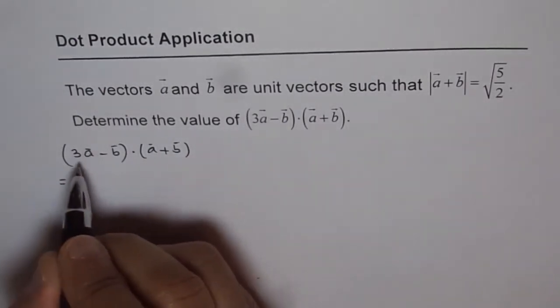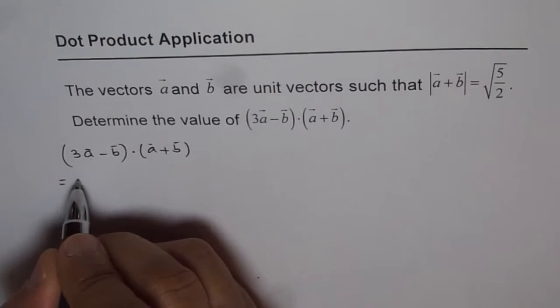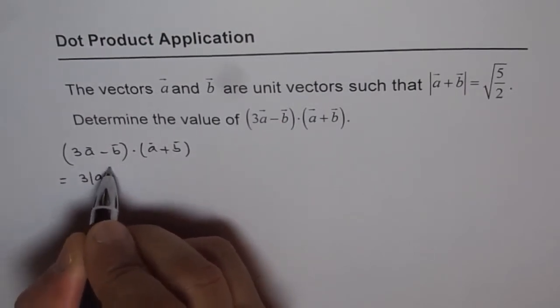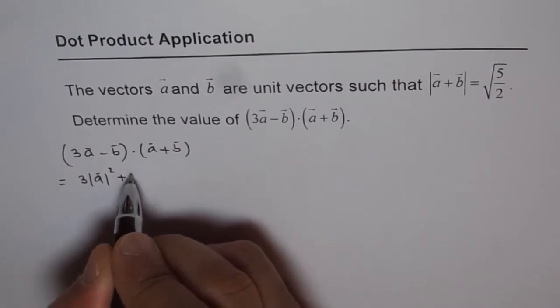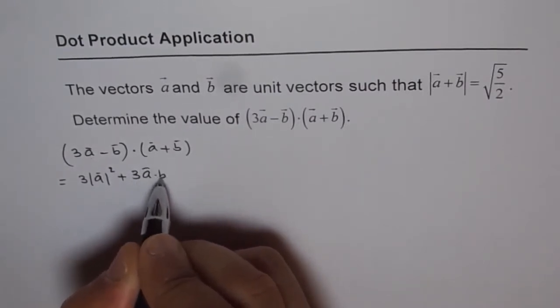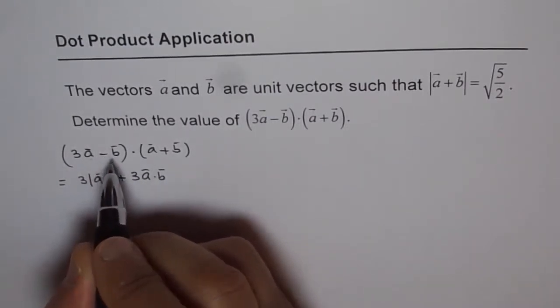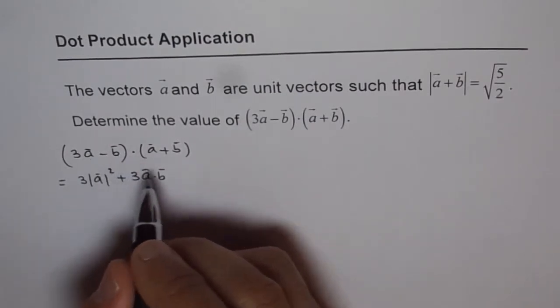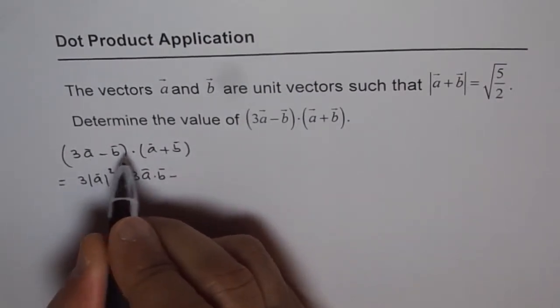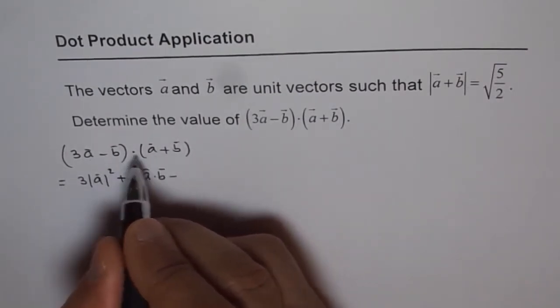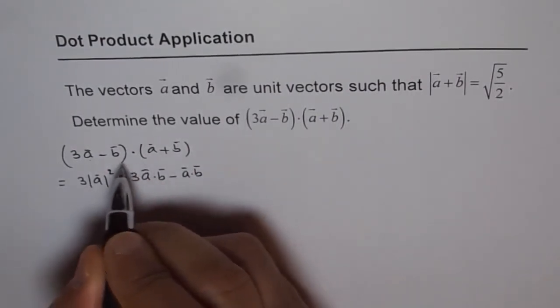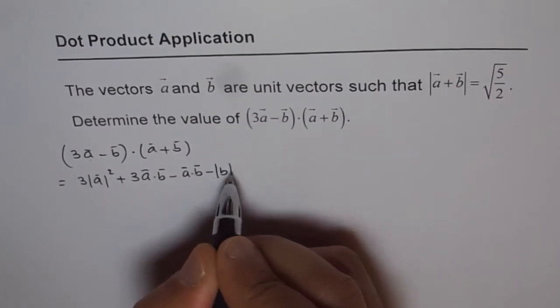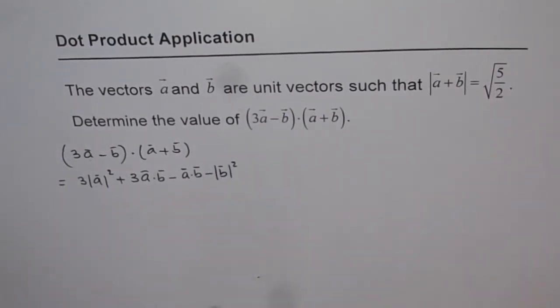And when you expand it, you get 3a dot a, which is 3 times the absolute value of a squared. And then you have plus 3a dot b, and then you multiply by minus dot product. So minus a dot b can be written as b dot a, since a dot b is commutative. So you can write this as a dot b.